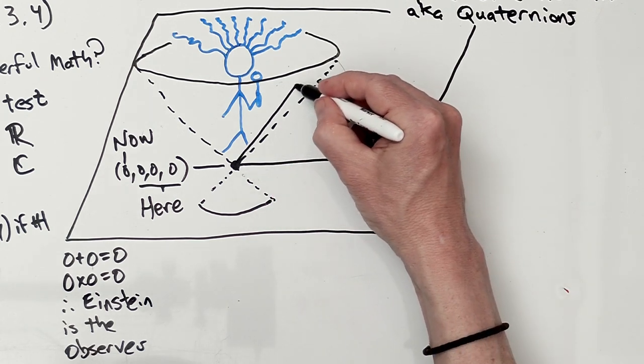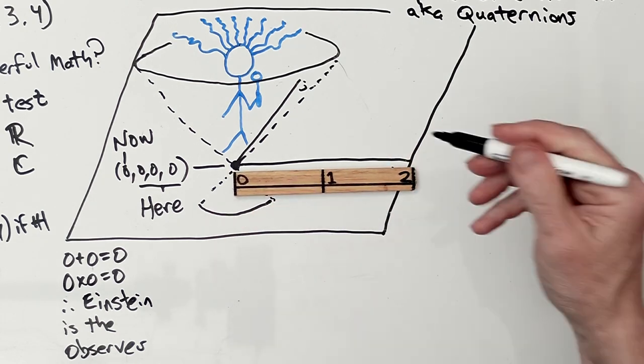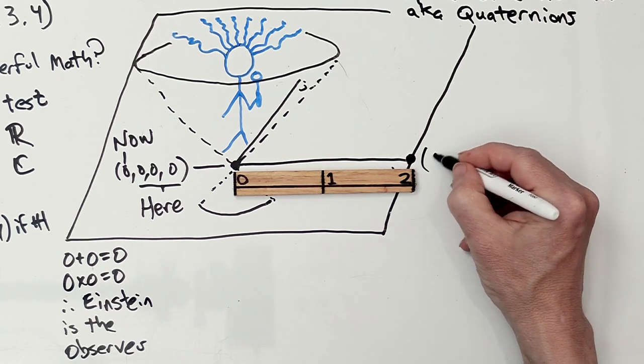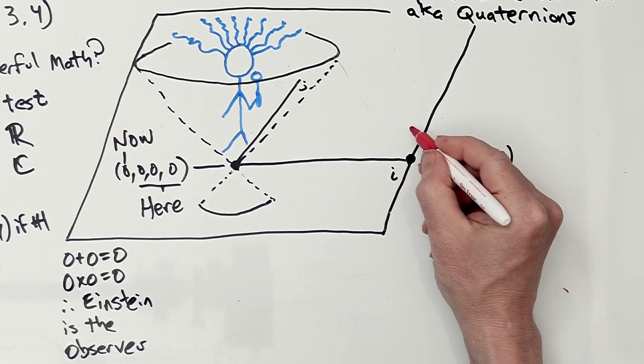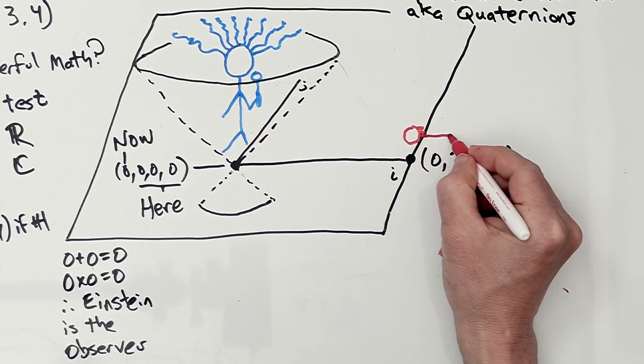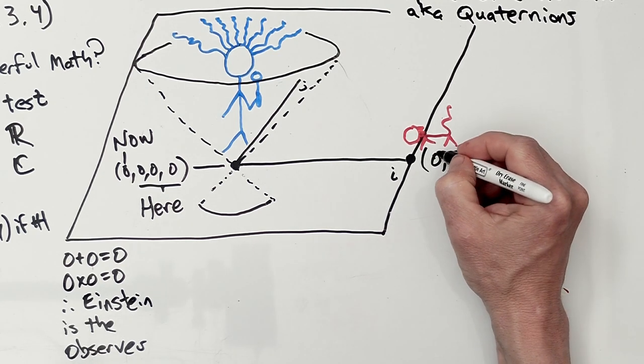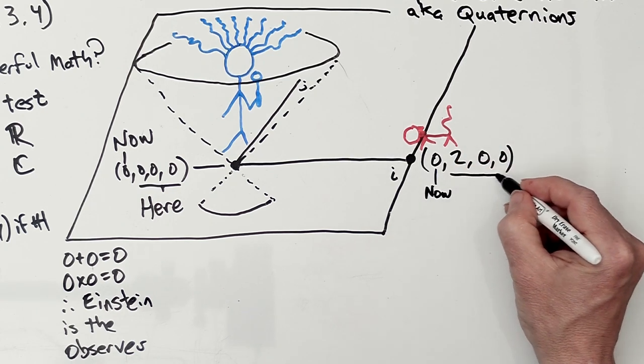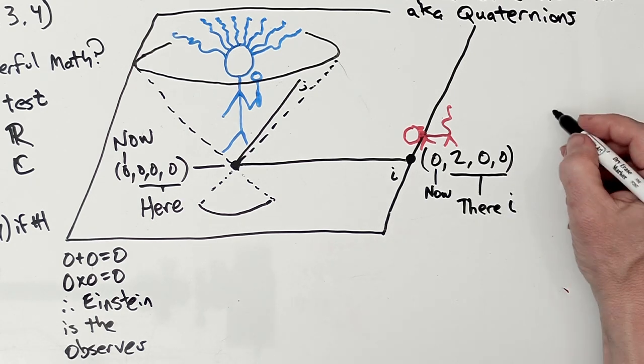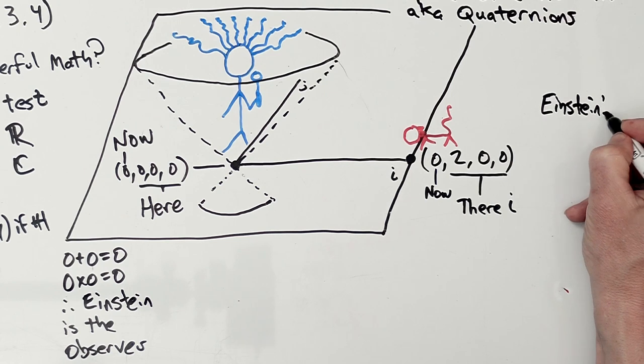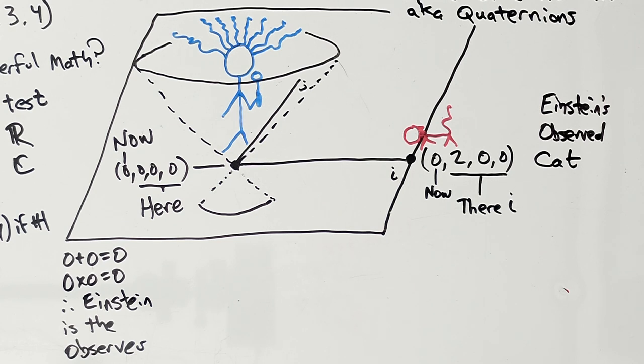Okay, so he has this plane with an I and a J, and we're going to give him something to look at right at the point (0, 2, 0, 0). What's he got to look at? His cat! Well, nice tabby cat in red. And here, that first number is 0, so that's now. And that's not here because one value is not 0. I call it their I. So that's Einstein's observed cat, observed by Einstein himself.